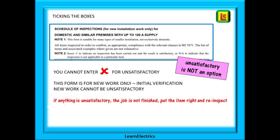Your work must be 100% correct when it is finished. If anything is unsatisfactory, if you have a snagging list, then the job is not finished. Remedy the problem and then re-inspect. You are about to sign a legal document stating that the work is fully complete, that there are no problems or revisits needed, and that the circuit is safe for the client to use.